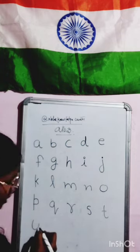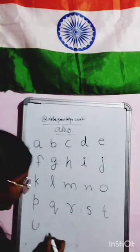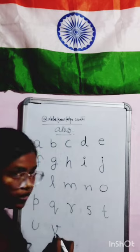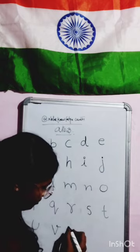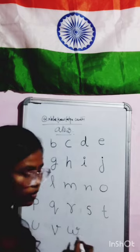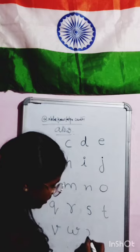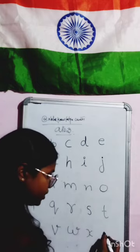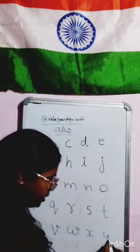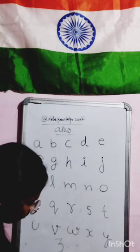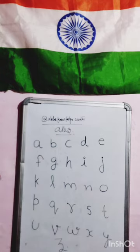T for Tiger, U for Umbrella, V for Van, W for Watch, X for X-ray, Y for Yak, and Z for Zebra.